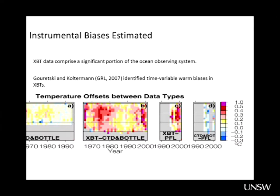In the 1970s, the XBTs were measuring warm relative to the ocean by significant amounts, with much smaller differences in the 1980s and early 1990s, and then measuring warm again in the late 1990s. So it's really this instrumental bias which is so dominant in the differences between the observational records and model simulations.